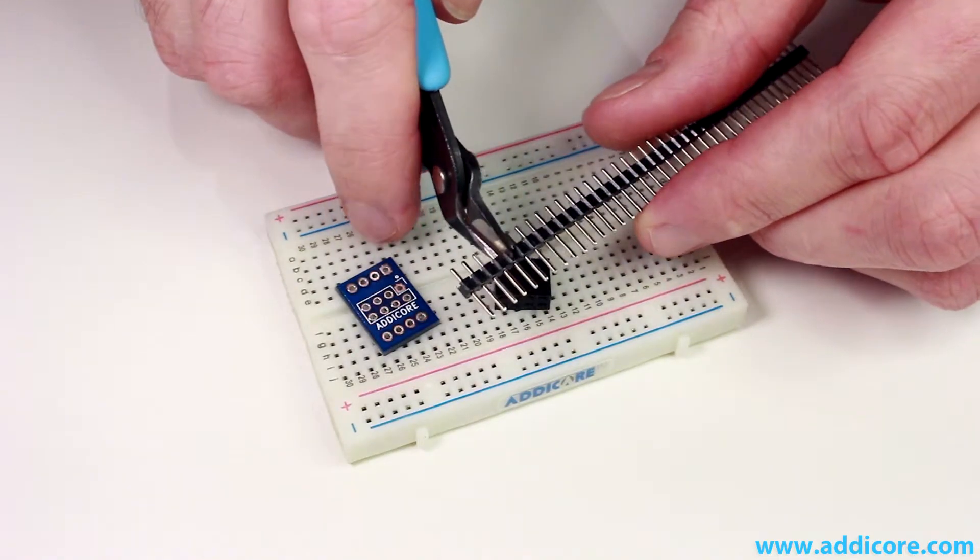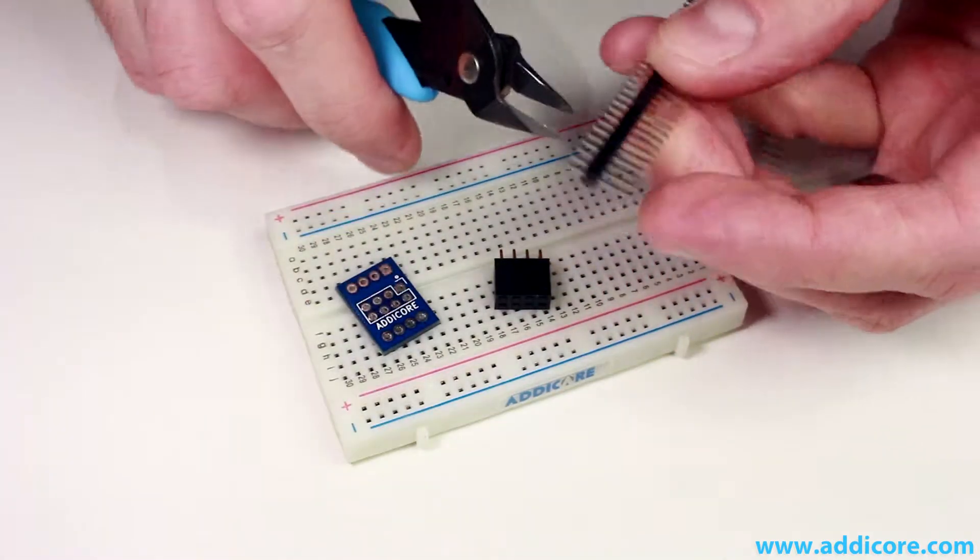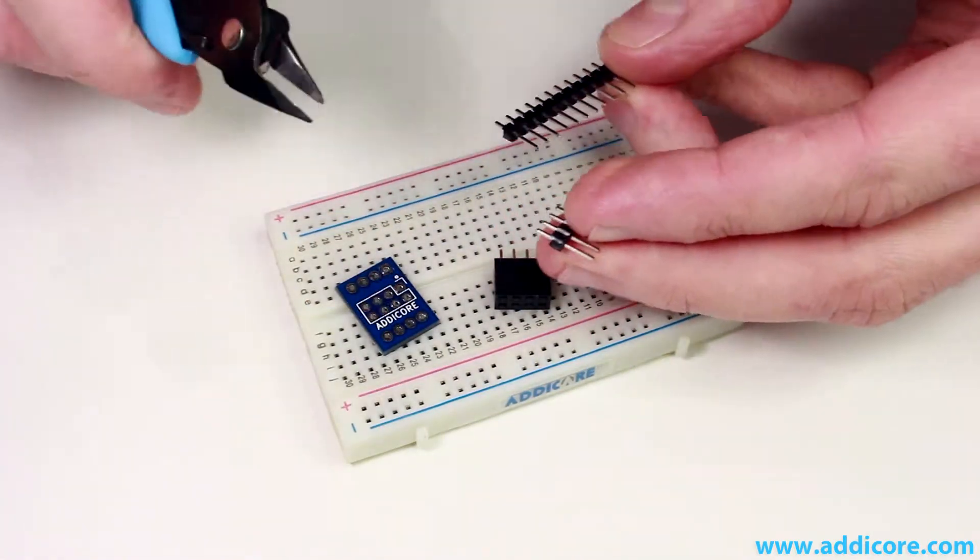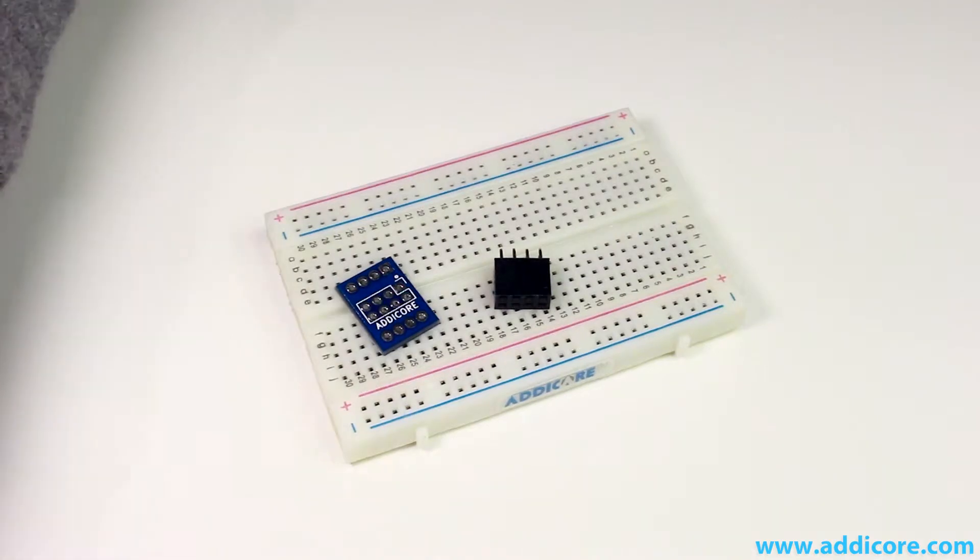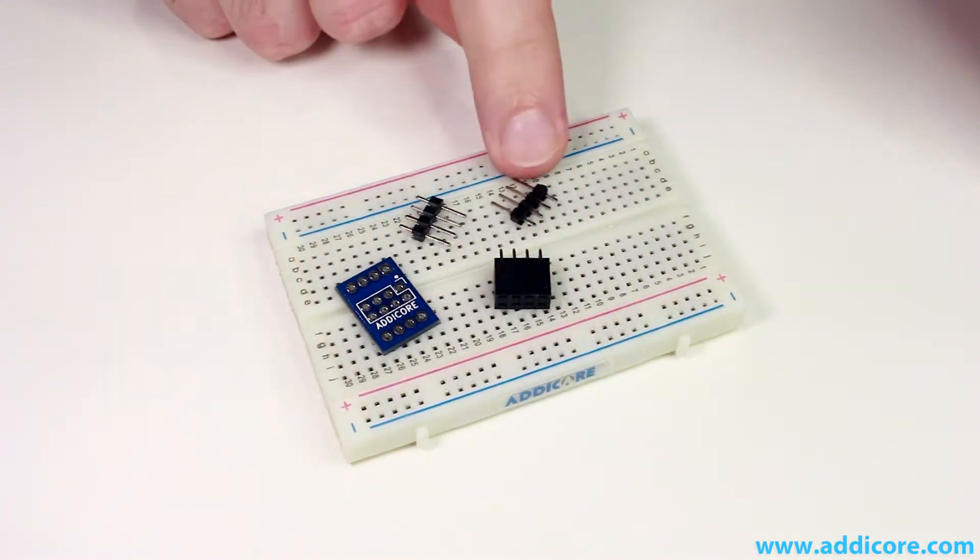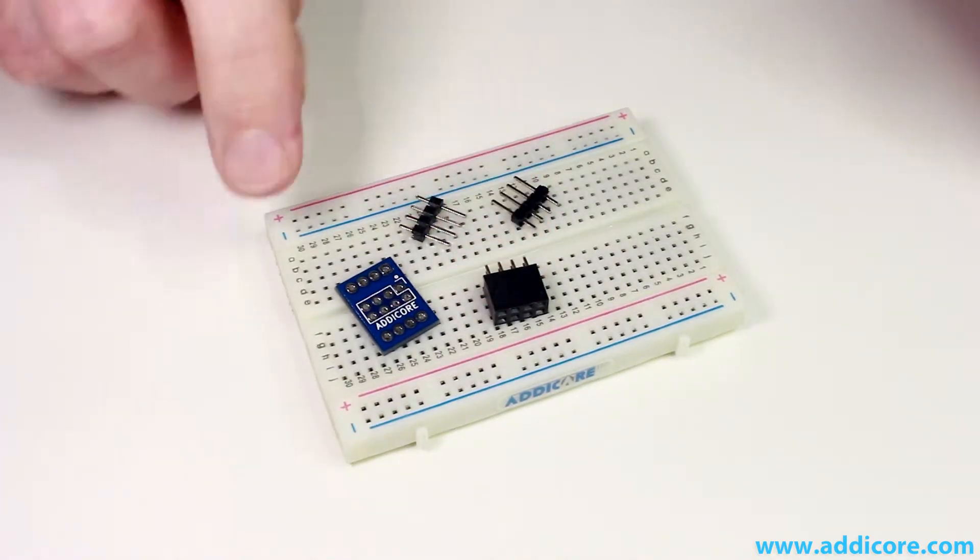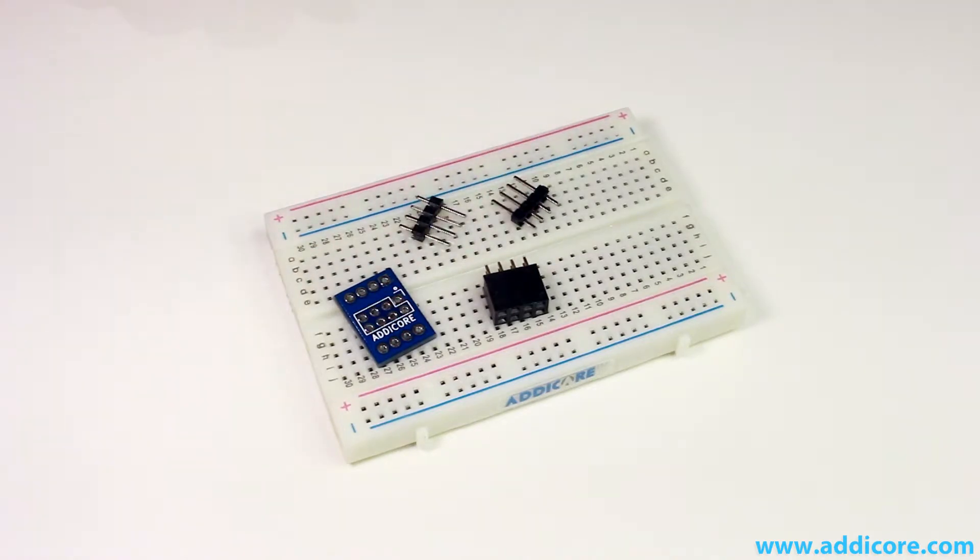So we want to cut this so that we have four. And we want to cut it again so that we have two sets of 1x4 male headers, one of the 2x4 female headers, and the adapter board. And that's all we need other than the solder to assemble one of these adapters.